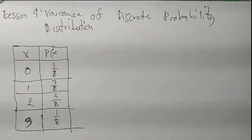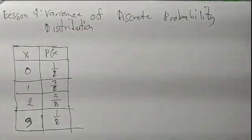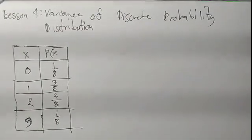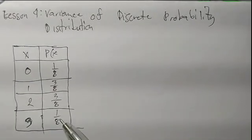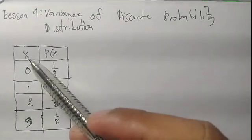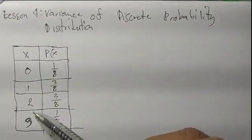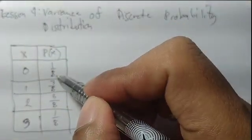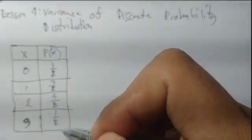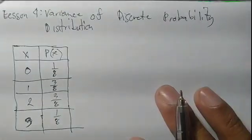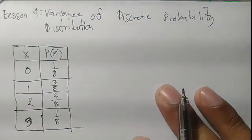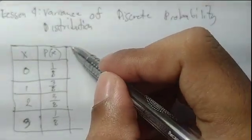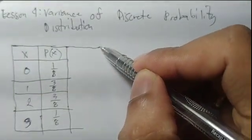Now for another example of finding the variance of a discrete probability distribution. Suppose x has values 0, 1, 2, and 3, with corresponding probabilities 1 over 8, 3 over 8, 3 over 8, and 1 over 8. As before, the first step is to find the mean.